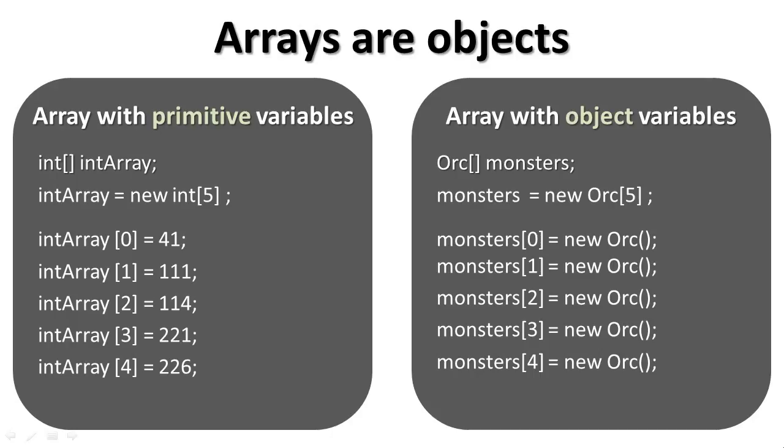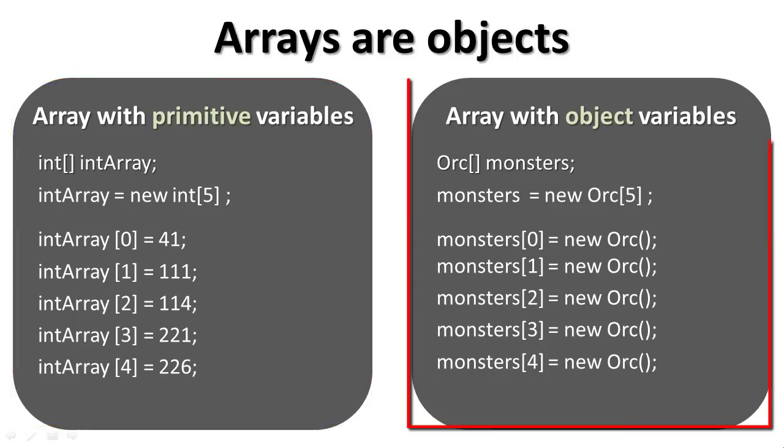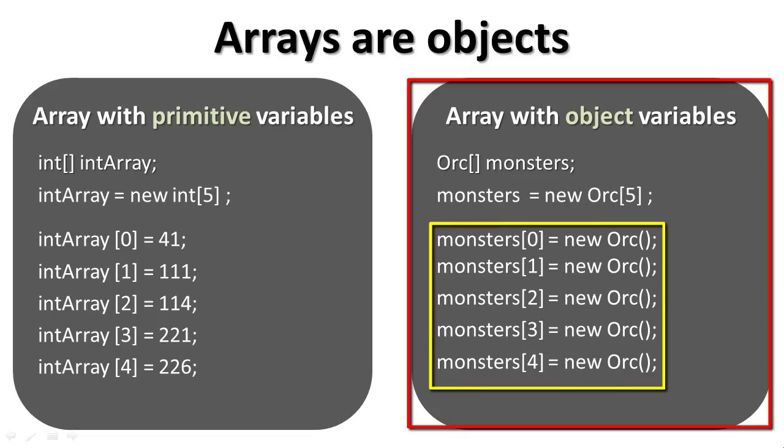In this example, this is an array that holds primitive variables. You'll remember that primitive variables hold absolute values. So here we're giving absolute values like 41, 111, 114. Now in this array over here, this is an array that holds objects and you can see the difference here. In the elements, we're actually declaring a new orc.